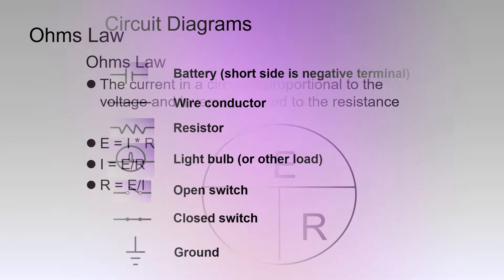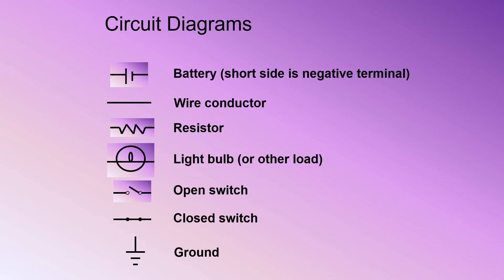Pictured here, you will see a few of the electrical symbols you will need to know for this course: a battery, a conducting wire, a resistor, a light bulb or some other load, an open and closed switch, and a ground. There are, however, literally hundreds of electrical symbols we will work with as an aviation maintenance technician. Many of them you can find in Advisory Circular 43-13.